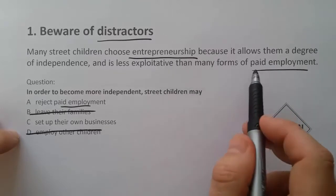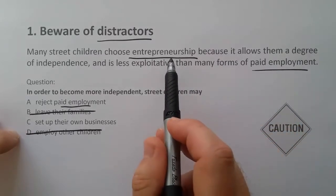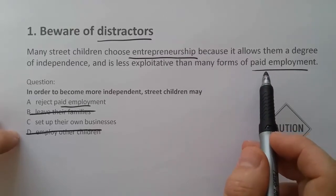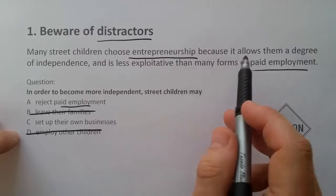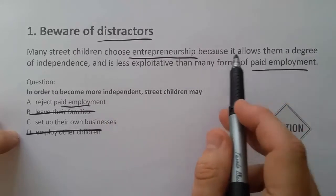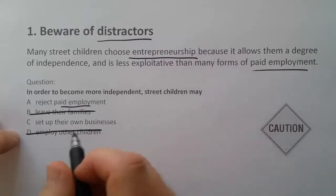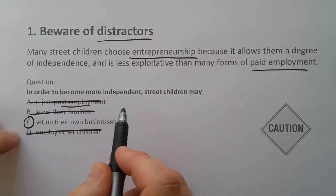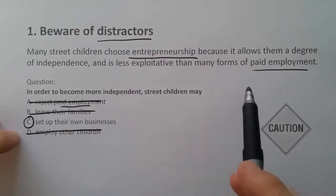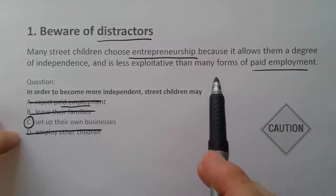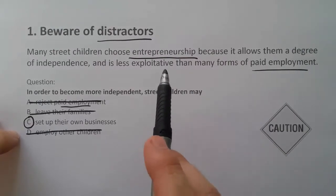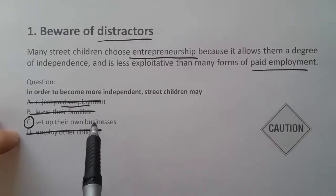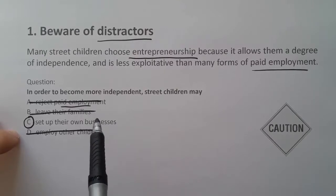So what's more important — entrepreneurship or rejecting paid employment? Well, to become more independent — 'a degree of independence' — it must be C: setting up their own business. So I'll cross out the others. It's a tricky question, however if we read carefully we can see that there is a distractor, and the right answer is found by using synonyms and parallel phrases.